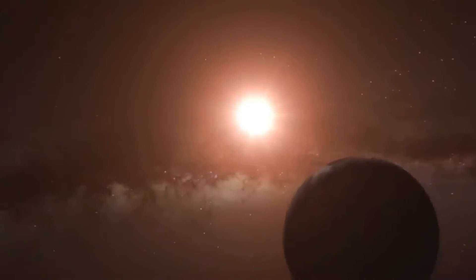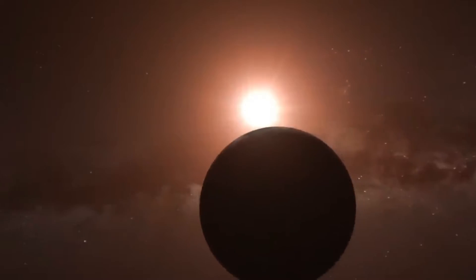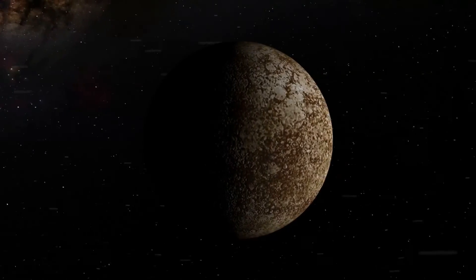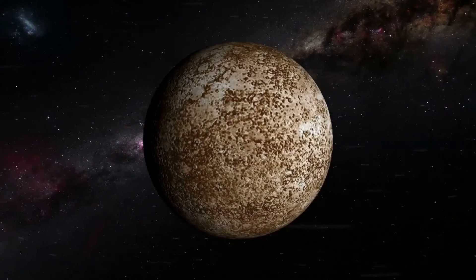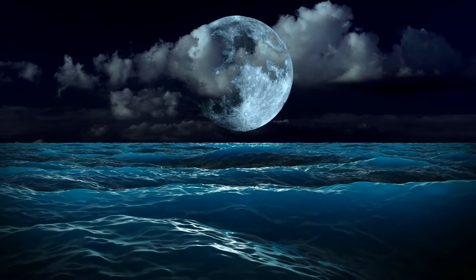Depending on how the planet was made, Proxima Centauri b could either be a planet like Mercury with a big core, which would mean certain things had to happen in the planet's early history, or it could be a planet with a lot of water.